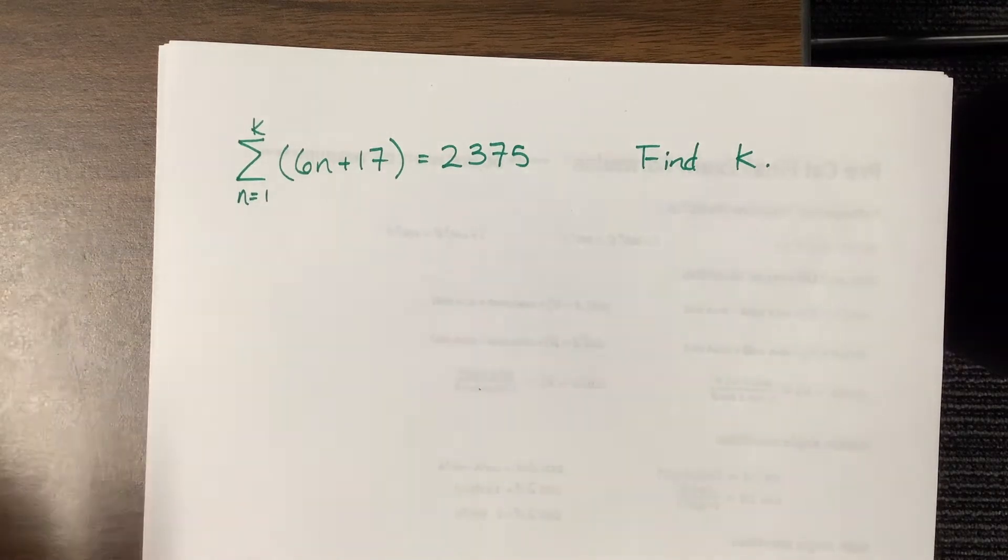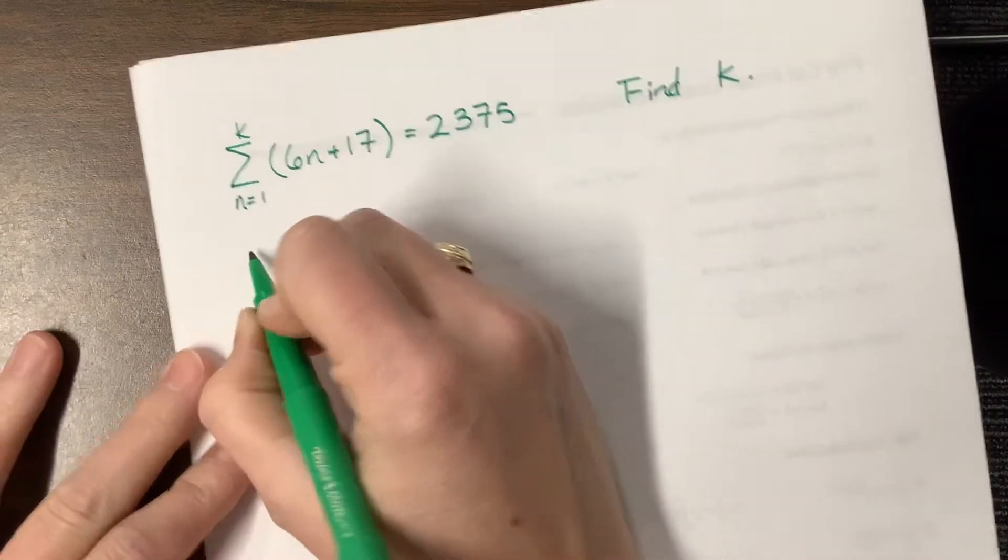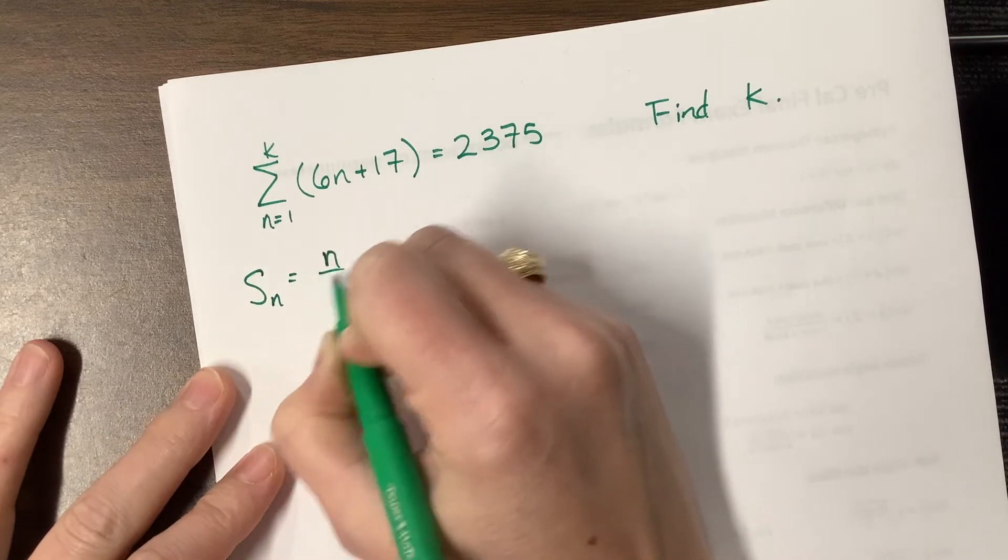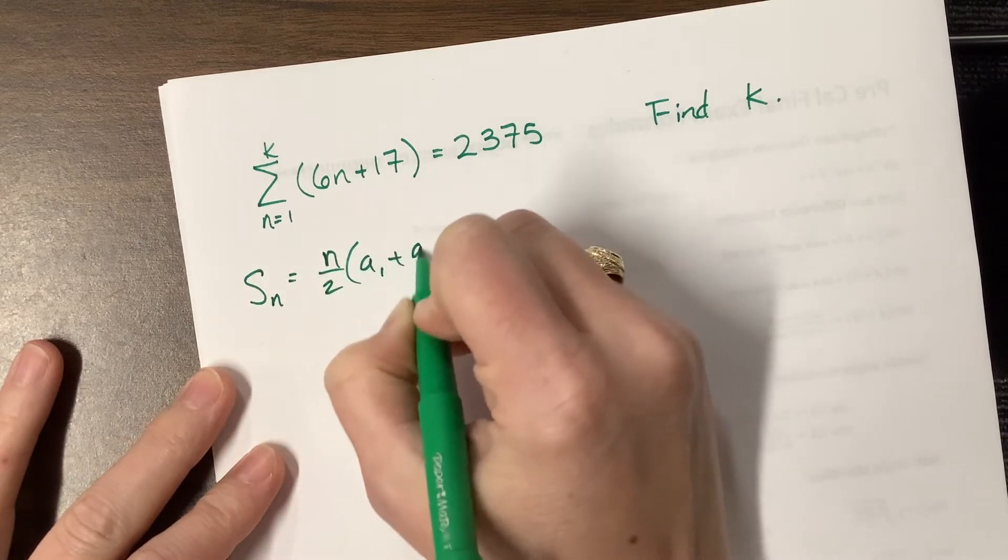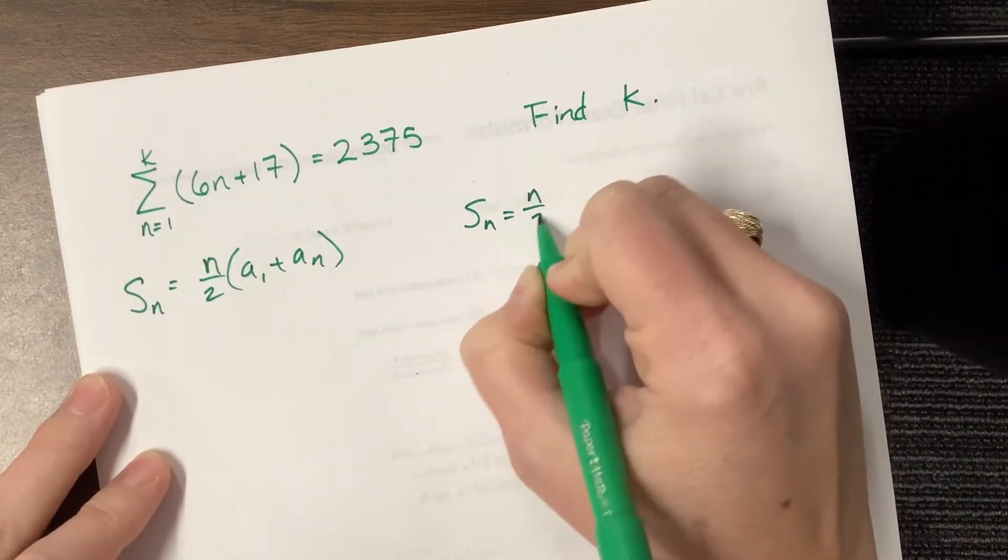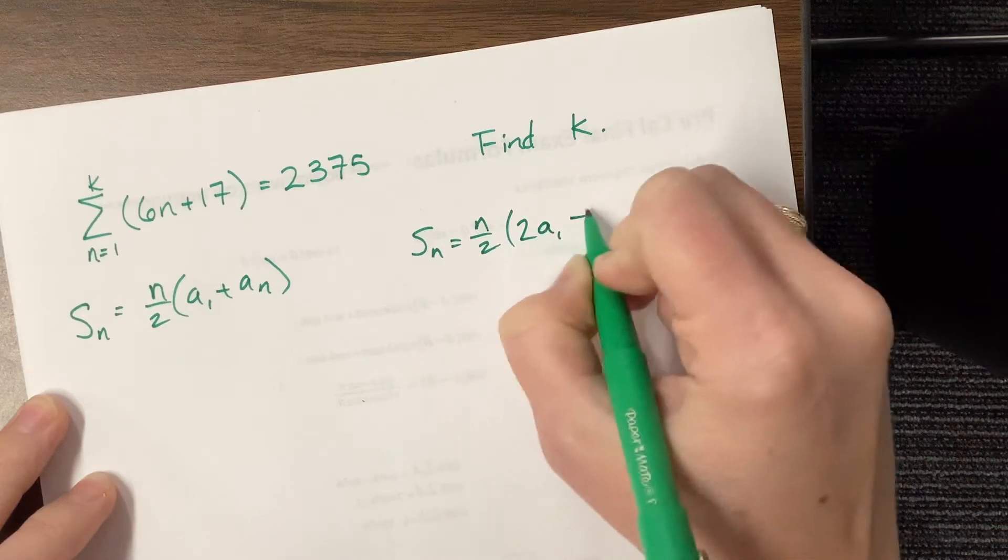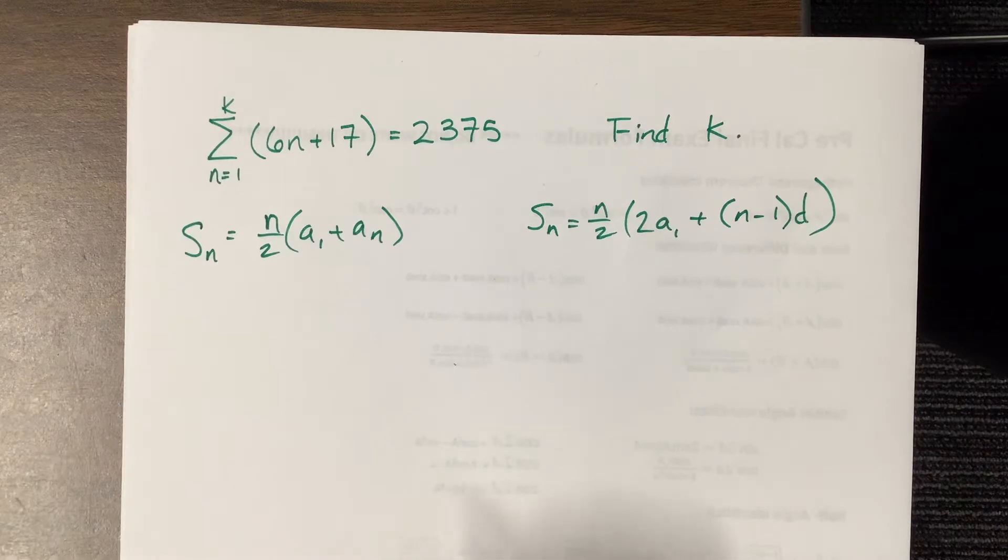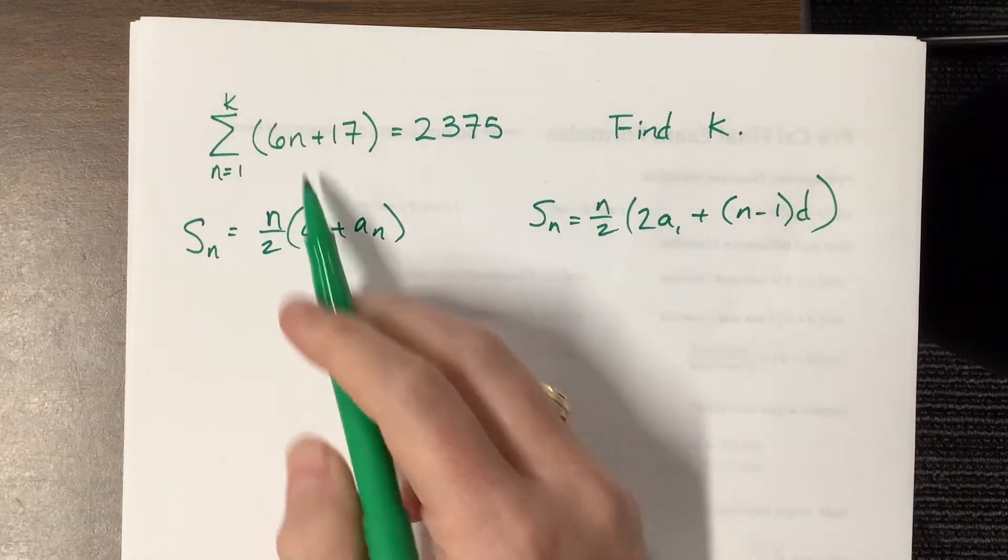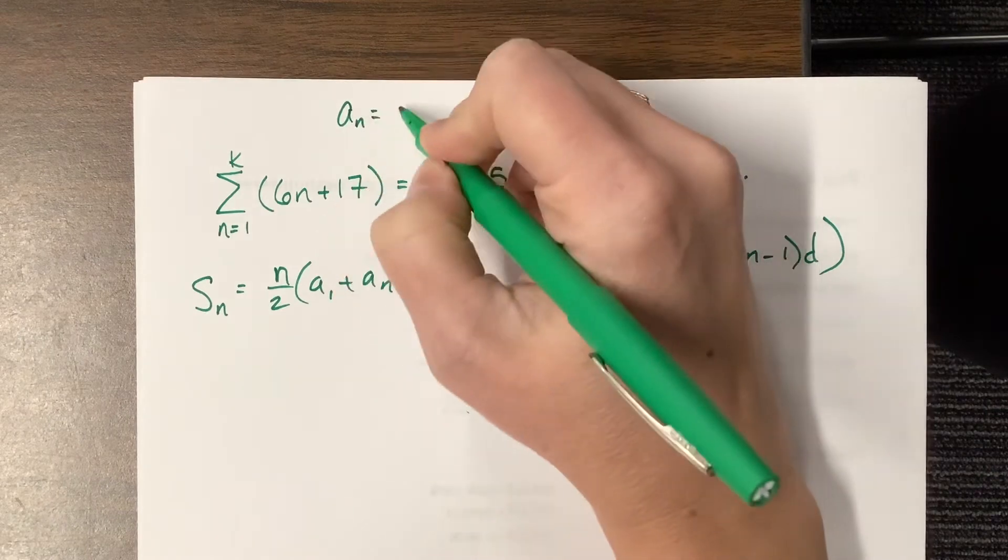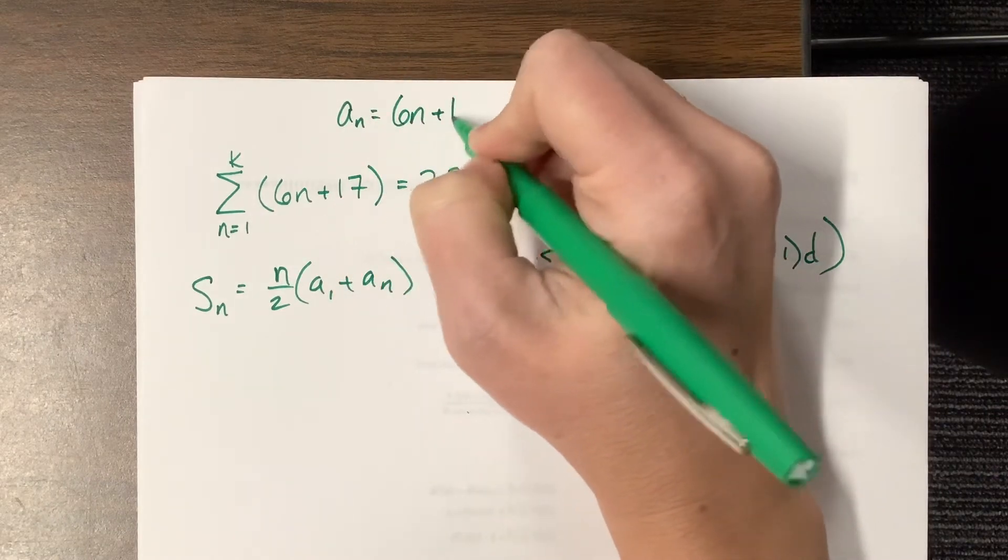We know it's arithmetic, and that means our arithmetic formulas are either going to be s sub n is equal to n over 2 times a sub 1 plus a sub n, or we could use s sub n is equal to n over 2 times 2 a sub 1 plus n minus 1 times d. When we look at those two things, we know the first term, because I can plug in 1. We know a sub n here is just this formula, 6n plus 17.